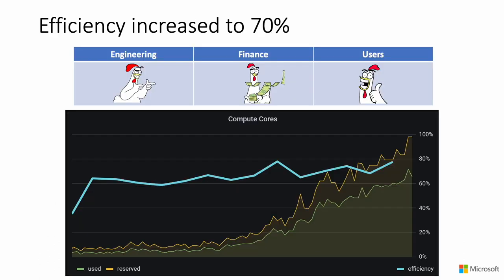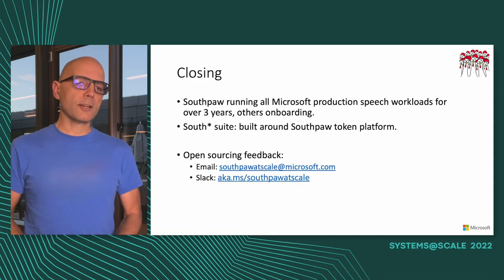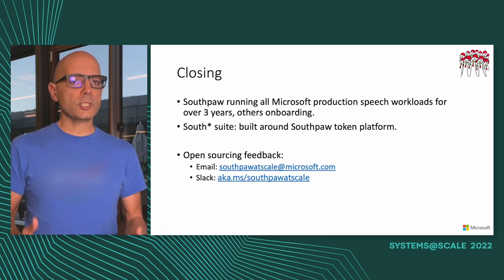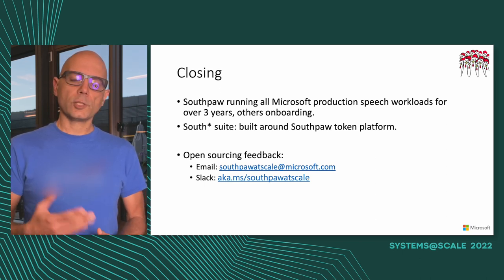To wrap up, the deployment we shared at the beginning had below 35% compute efficiency. After applying all these innovations, we managed to raise efficiency safely to 70% while keeping engineers happy and saving money. Southpaw has been running all Microsoft production speech workloads for the past three years, and others are onboarding. It was so successful that we internally built what we call the Southstar Suite — a bunch of unified tooling around the Southpaw token platform. We're also considering open sourcing Southpaw to help the community, so please share your opinions and thoughts. Thank you very much for listening and have a great day.